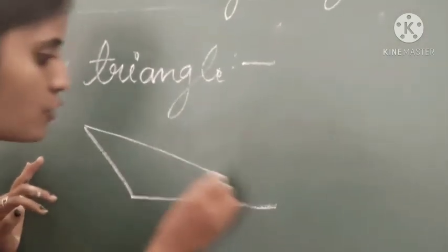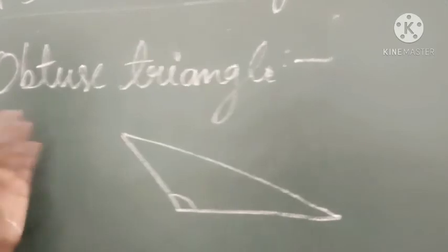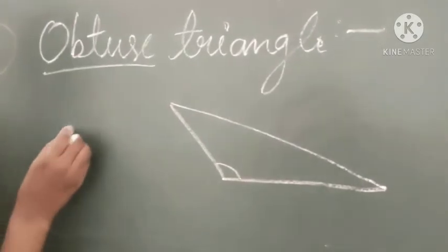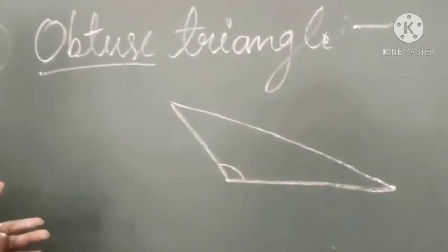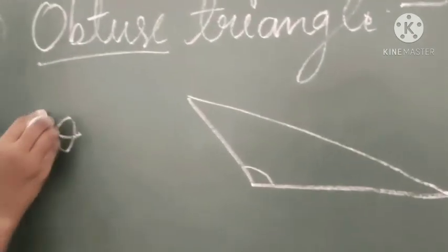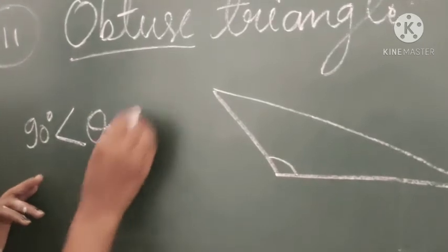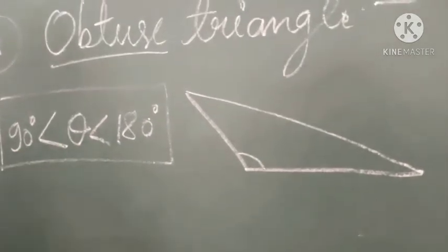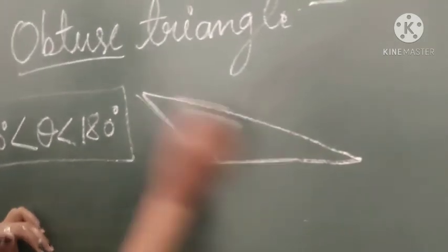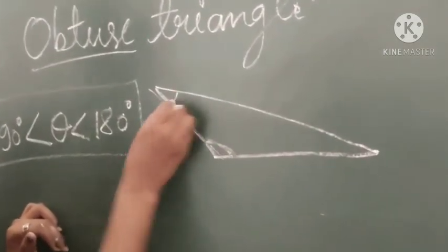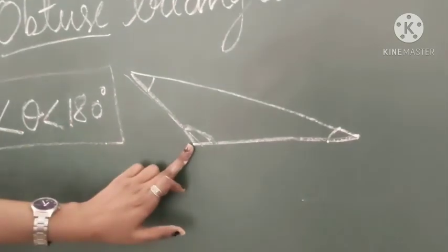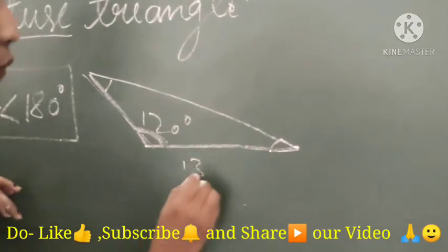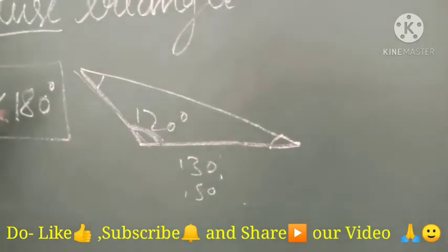Now, what is an obtuse angle? Since we are classifying on the basis of angles, you need to know what an obtuse angle is. An obtuse angle is an angle which is greater than 90 degrees but less than 180 degrees. In an obtuse triangle, one angle of the triangle must be an obtuse angle — for example, 120, 130, or 150 degrees. This is the obtuse triangle.